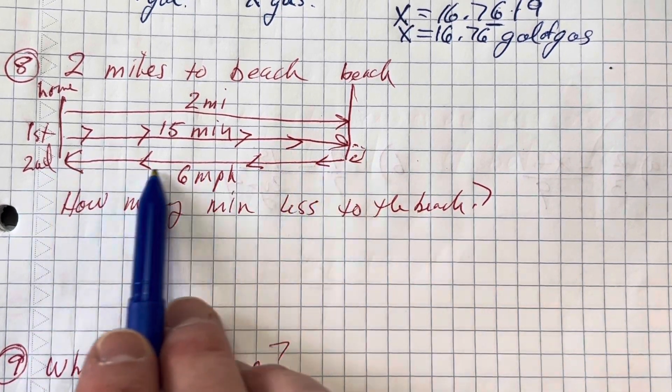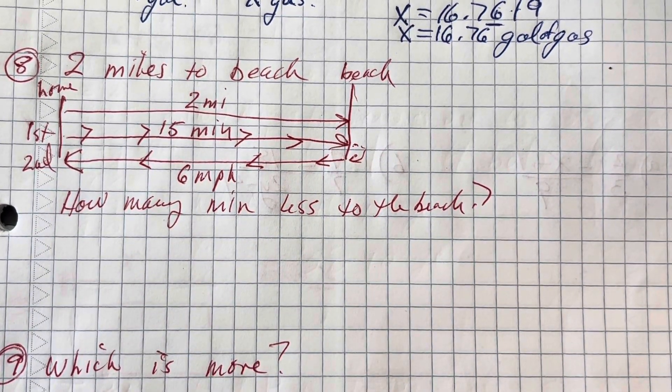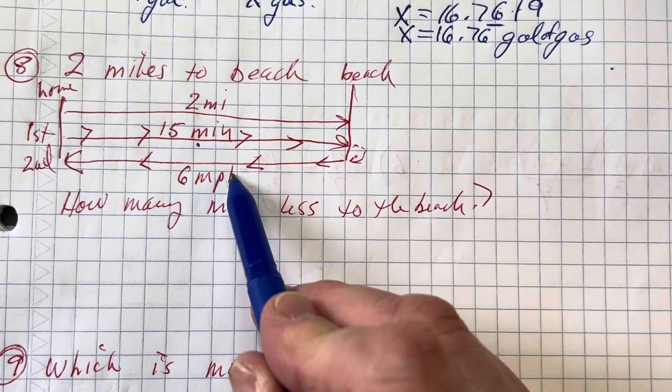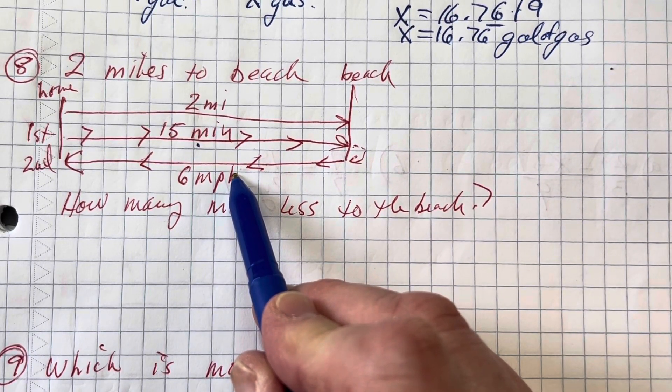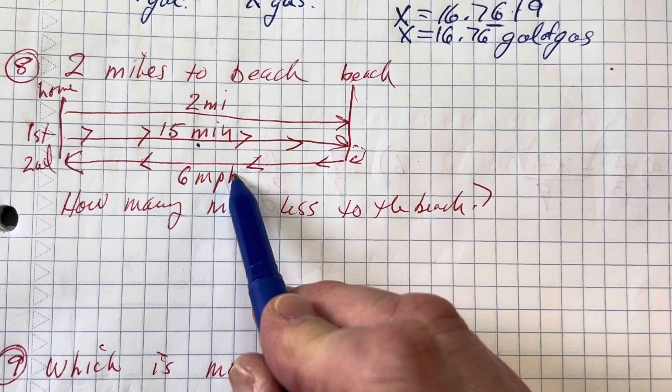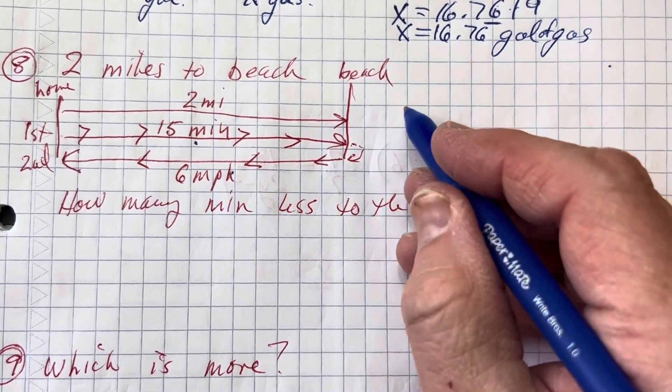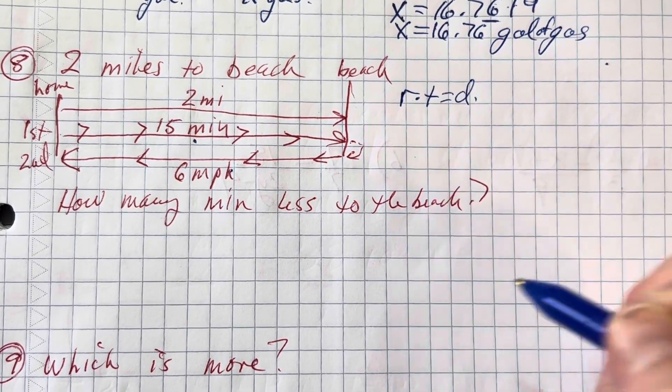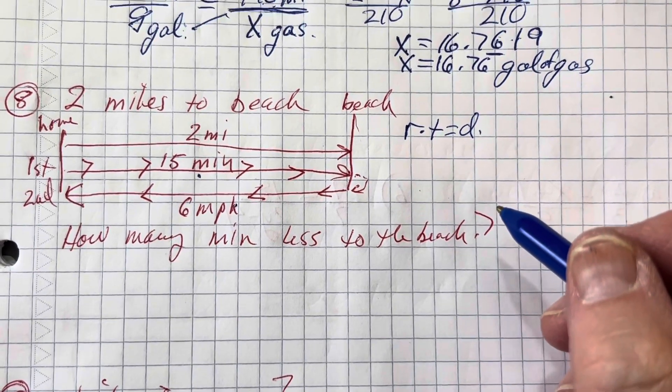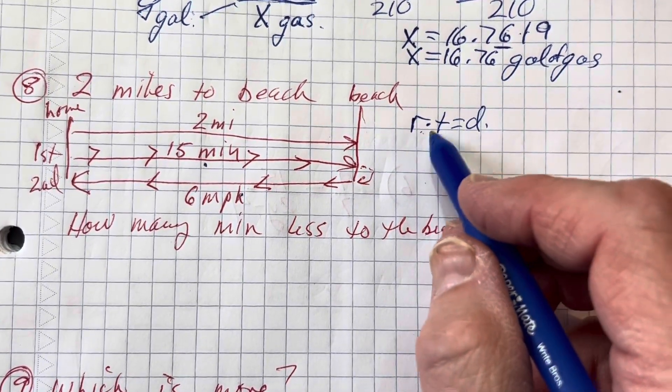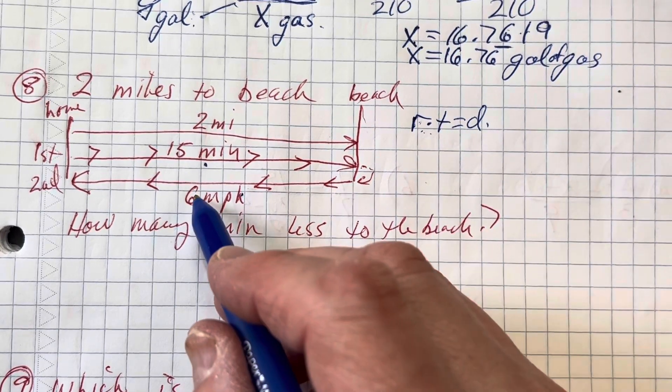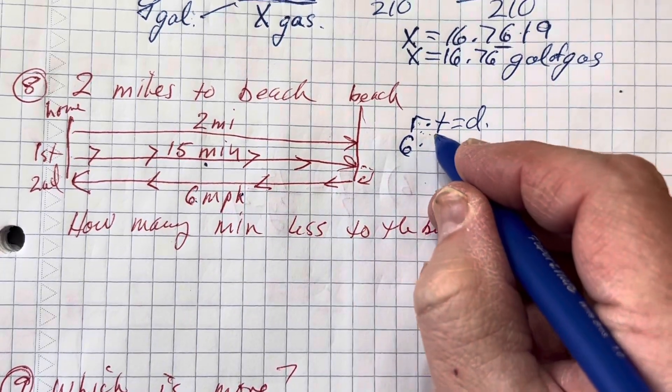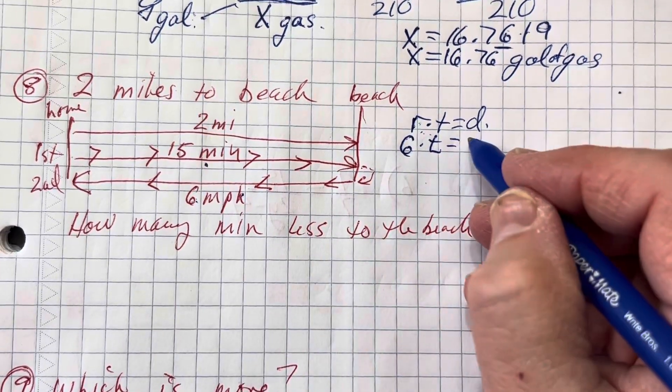And the second trip on the way home was 6 miles per hour. How many minutes less to the beach? Well, we know this was 15 minutes to the beach. And this might be more. I don't know. Let's see. If I could do rate times time equals distance for this part, that should help me. Rate times time equals distance. That's the formula you need to remember. Rate times time equals distance.